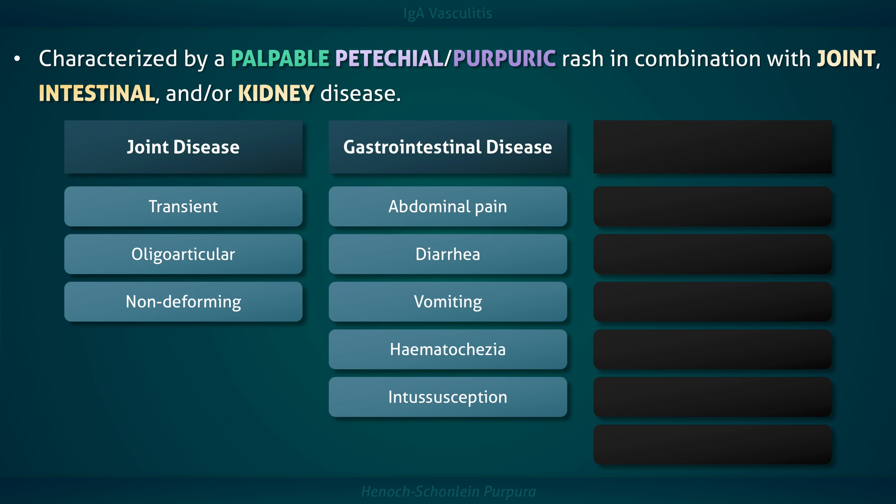Gastrointestinal manifestations may include colicky abdominal pain, vomiting, diarrhea, and hematochezia. Intussusception may occur in children but is rare in adults. When intussusception does occur, it is commonly ileo-ileal as opposed to the more common ileocolic location in idiopathic cases.